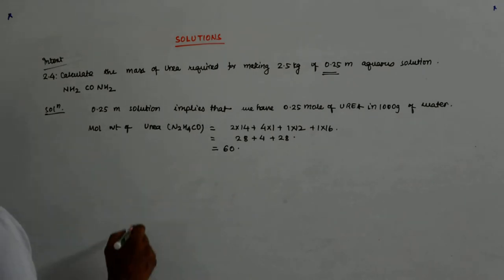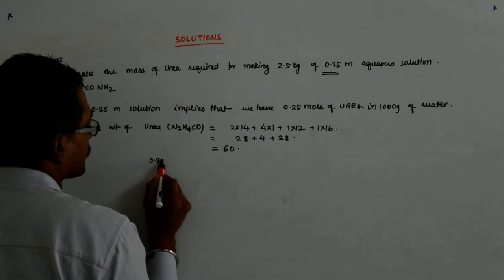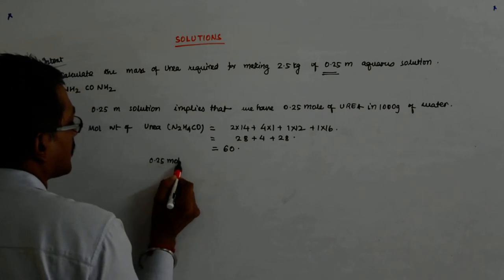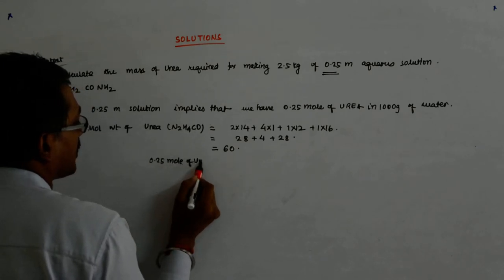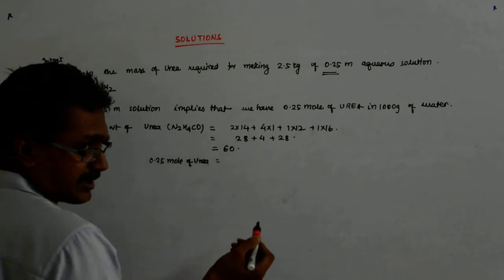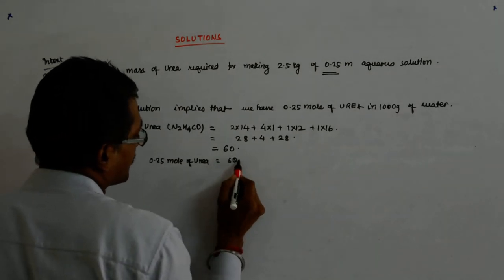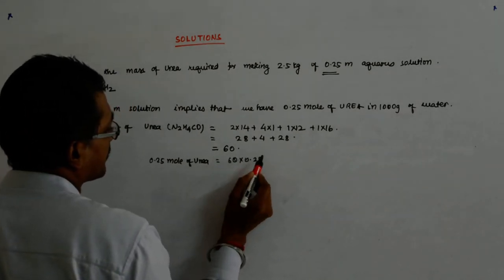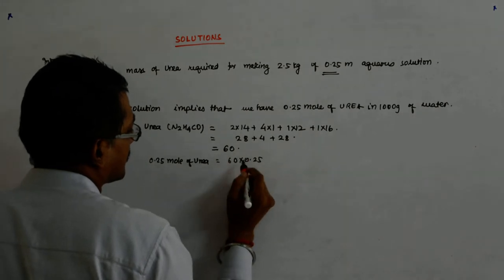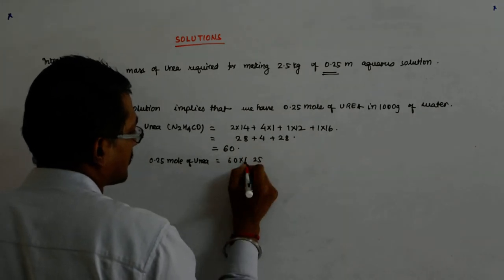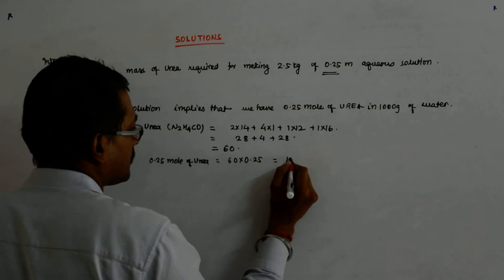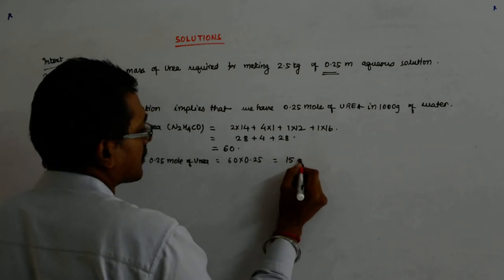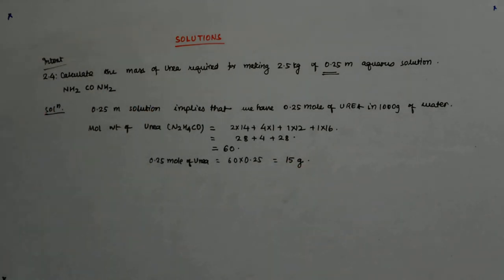So 0.25 mol of urea, 0.25 mol of urea is 25% of that. So 60 into 0.25 which is equal to 15 grams.